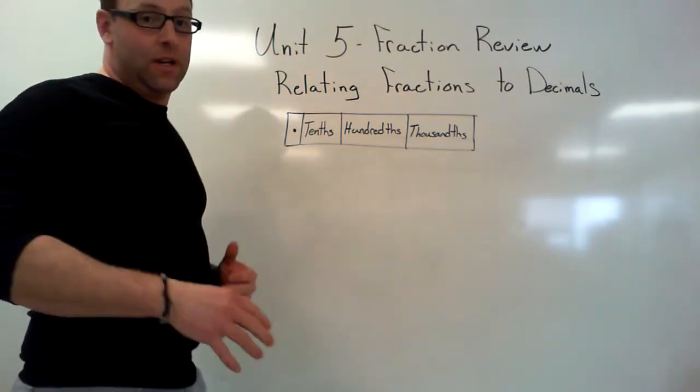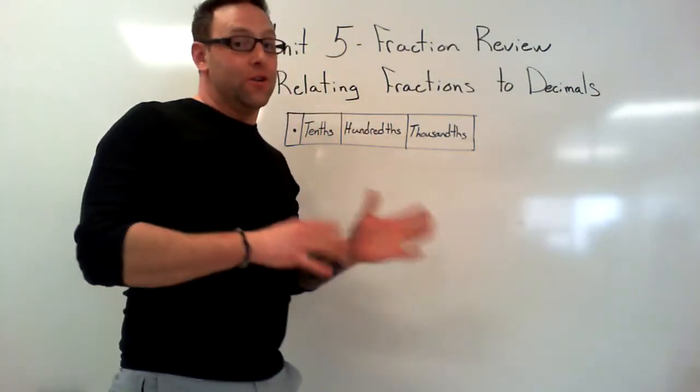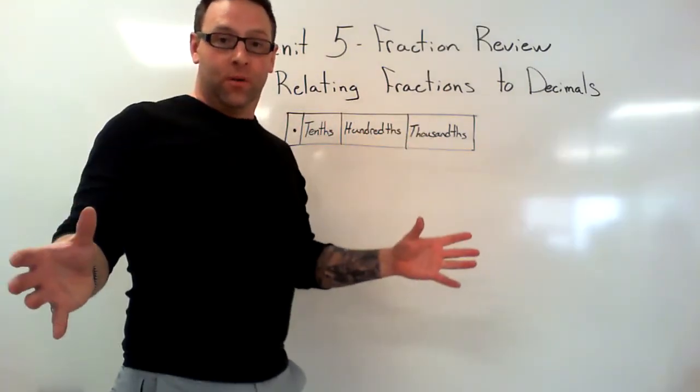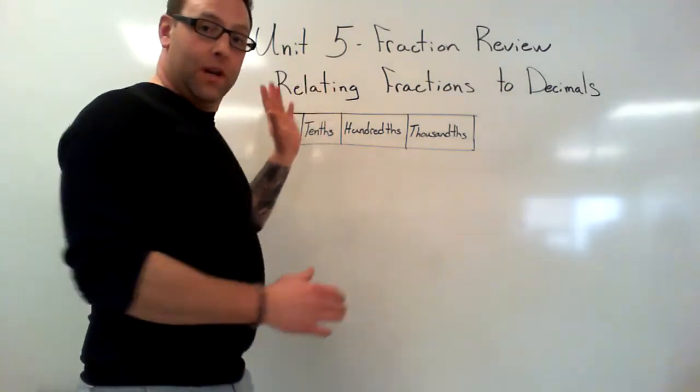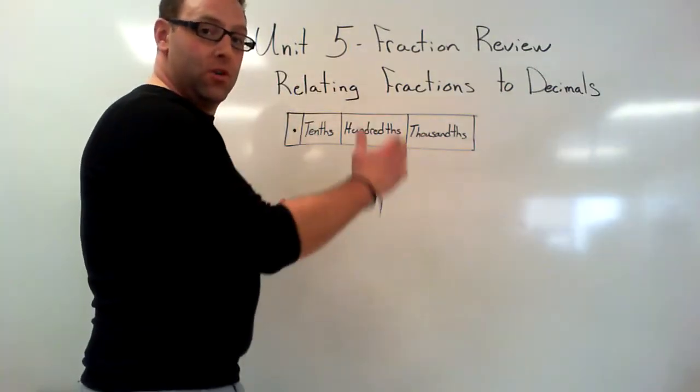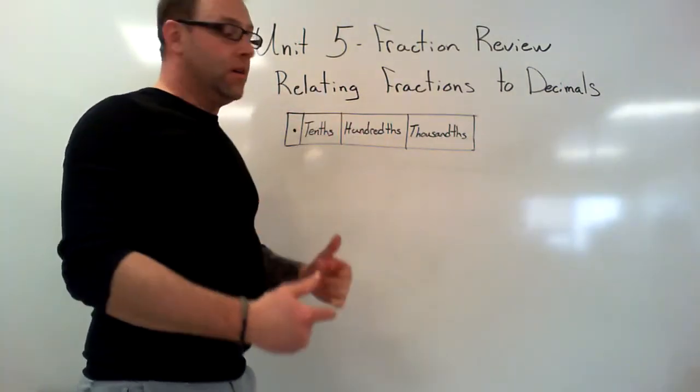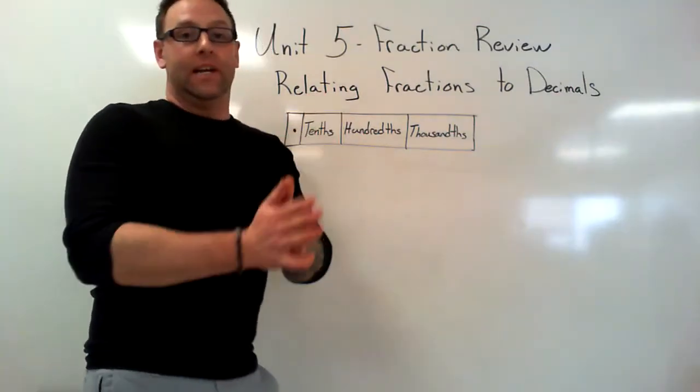The important thing to think about here is that a fraction and a decimal are virtually the same thing. They're both part of a whole. When we're talking about fractions, we had the number line before between zero and one. Those numbers between zero and one are all decimals. How does that relate to a fraction?